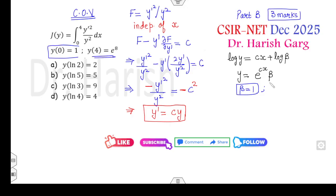When you take y of 4 is equal to e raised to power 8. So, it is e raised to power 4c. C will be my 2. So, finally, your solution becomes y is equal to e raised to power 2x.